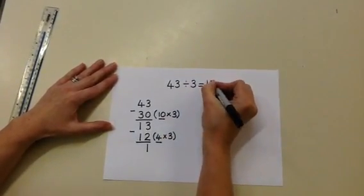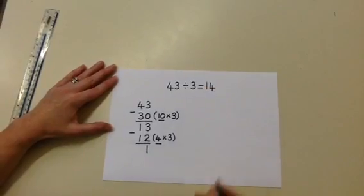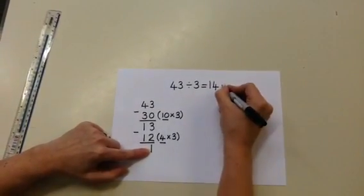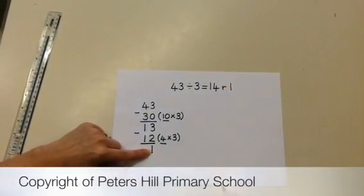We're going to calculate the groups by adding the 10 groups and 4 groups together to make 14. And we have 1 left over, which is our remainder.